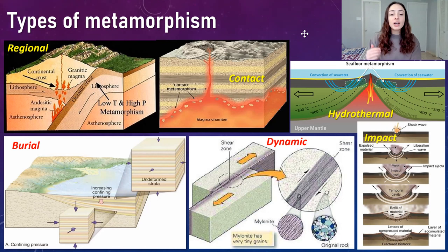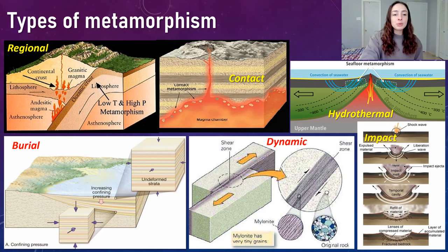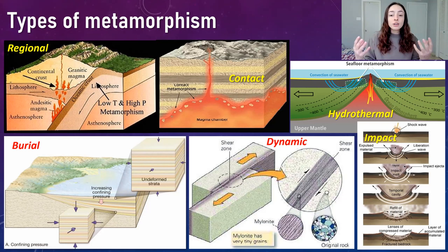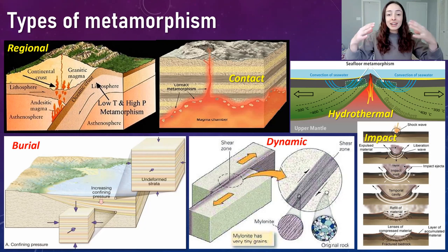There are many types of metamorphism. Regional and contact are probably the most commonly taught. Regional metamorphism occurs on a regional scale where subduction zones or plate boundaries cause high temperatures and pressures in rocks being buried, crushed, and deformed but not fully melted. Contact metamorphism is when intrusions of magma chambers or plutons come into contact with country rock, and the heat caused by that intrusion metamorphoses rock right at that contact.